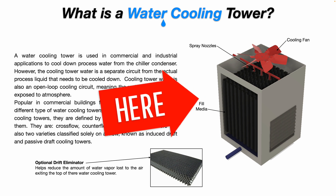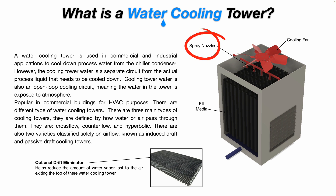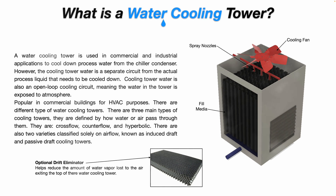The graphic on the right shows the basic parts or components of a water cooling tower. You have your cooling fan on top, your spray nozzles, and your fill media, which could be made out of PVC or stainless steel. You also have an optional drift eliminator, which helps reduce the amount of water vapor lost to the air exiting the top of the tower. The more water that gets evaporated out of your cooling tower, the more fresh water makeup you have to add, which increases your water bill.